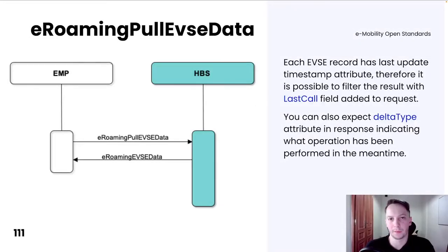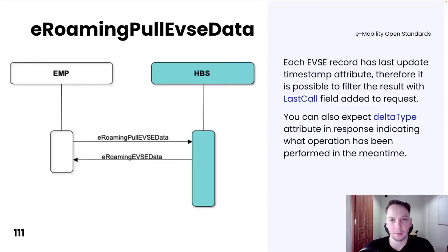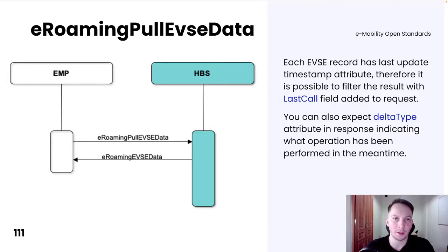As we have seen before, Hubject holds a lastUpdate attribute in every record stored in their platform. That allows Hubject to offer filtering functionality based on the lastCall attribute added in the request. LastCall is used for fetching only those data records that have changed compared to the EVSE state at the time of the lastCall value.